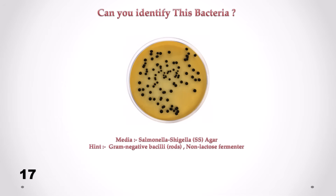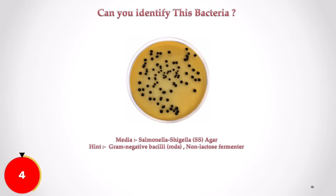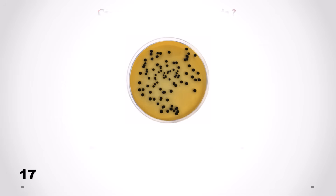Can you identify this bacteria? Correct answer is Salmonella. We can see black centers from H2S production.